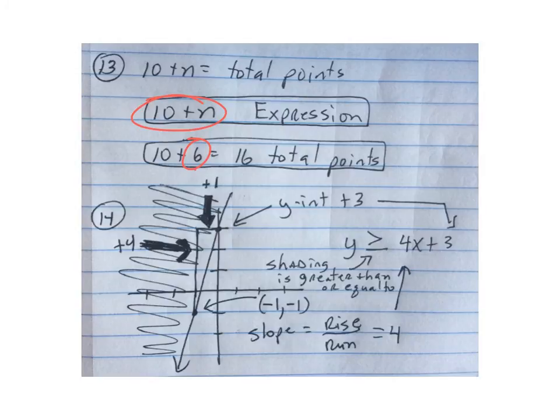Number 14, when you look at this, this is your y-intercept, so that's your plus 3. And then you look at this other point down here and you count the slope. So it's rise over run, so it was 4 over 1.